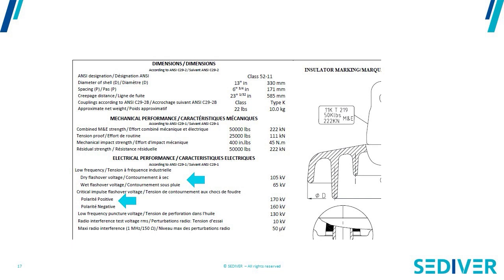The second definition is critical impulse flashover voltage. This is a voltage applied on a very short-term basis, simulating lightning. We give values in our catalogs for both impulse flashover and withstand. A lightning can have two polarities — either positive or negative — so on our drawings we give a critical impulse flashover value in both positive and negative polarity.